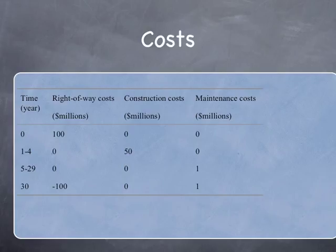We also have costs per year. In year 0, you buy the right-of-way — let's say $100 million. Construction takes 4 years at $50 million a year, with no construction costs from years 5 to 29. There are also maintenance costs of $1 million every year. In year 30, you have the salvage costs. The road has a 30-year life.